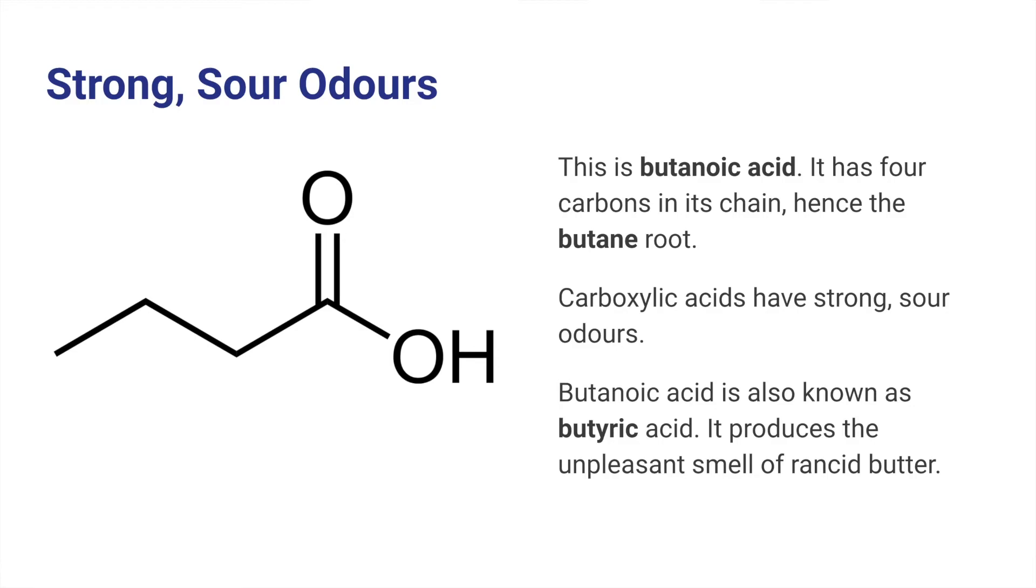Carboxylic acids all have strong sour odors. This one is butanoic acid. It's got four carbons in its chain. So that's why we use a butane root. This one really smells horrible. It smells like vomit.